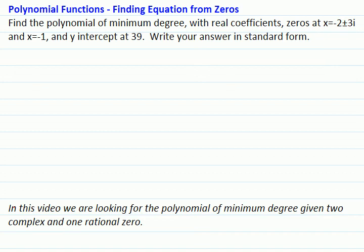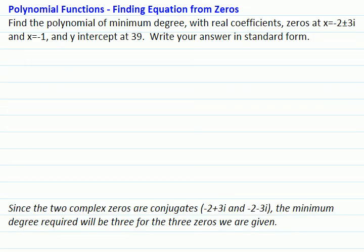In this video, we are looking for the polynomial of minimum degree given two complex and one rational zero. Since the two complex zeros are conjugates, negative 2 plus 3i and negative 2 minus 3i, the minimum degree required will be 3 for the three zeros we are given.